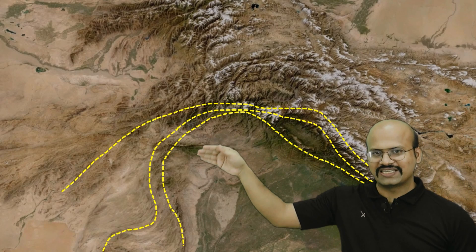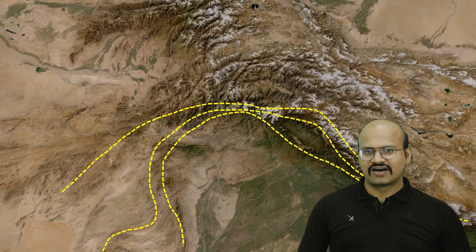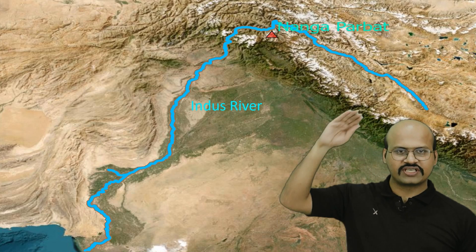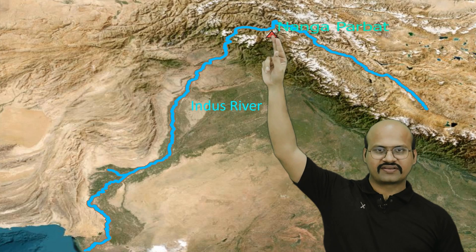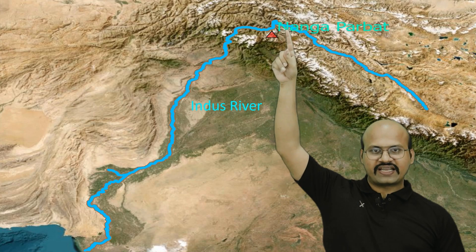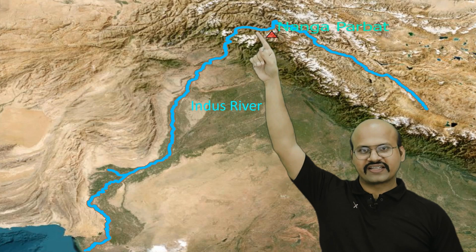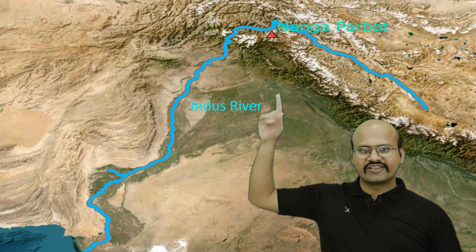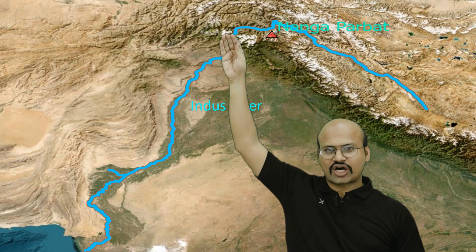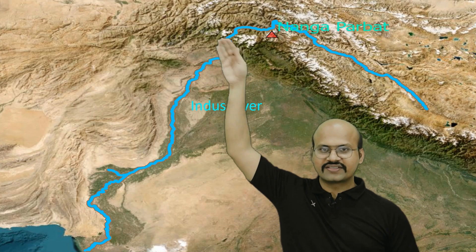If we outline the Himalayan mountains, we can see they proceed in the southern direction on the western side. Looking at the river in this region, it moves in the northern direction, but when it comes close to Nanga Parbat, it takes a sharp southward turn and then flows in the southern direction. This validates that the Himalayas take a southward bend near this region.